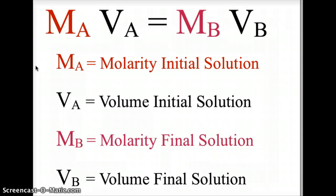Later when we talk about acids and bases, that MA will be the molarity of the acid, VA will be the volume of the acid, MB will be the molarity of the base, and VB will be the volume of the base. But that will come with titrations when we talk about acid and base titrations.